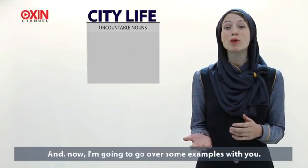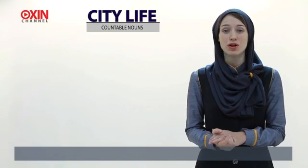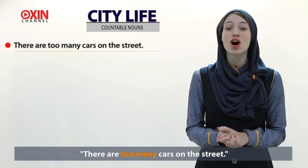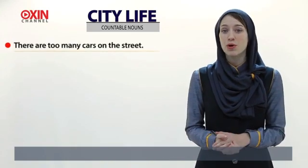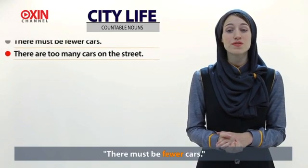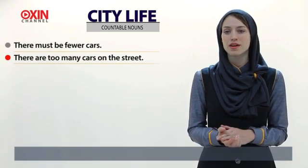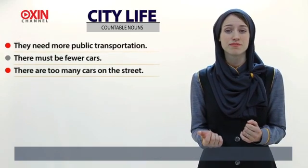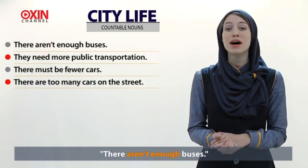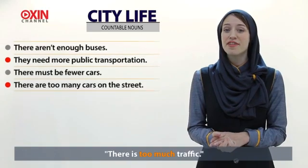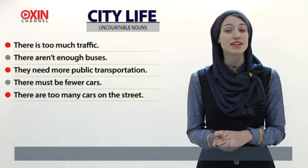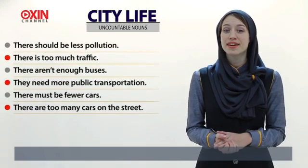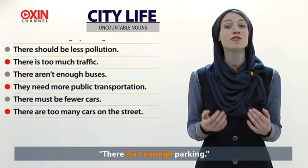Now let's go over some examples. You can say: there are too many cars on the street, or there must be fewer cars. They need more public transportation. There aren't enough buses. There is too much traffic. There should be less pollution. There isn't enough parking.